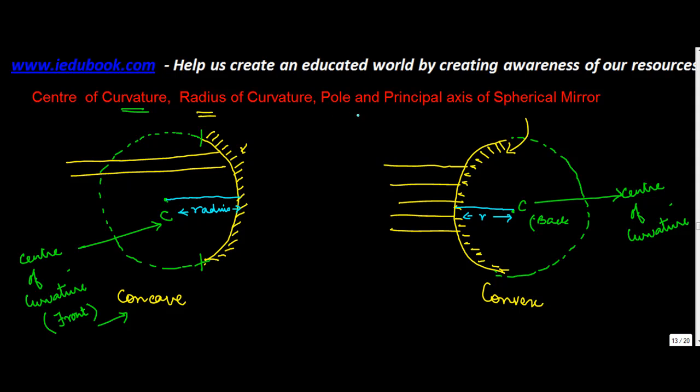Now the next point is the pole. If you see the center of this particular mirror, this is known as the pole. So for this mirror also, this point which is representing the center of this particular convex mirror is known as its pole, and you can denote it by point P.